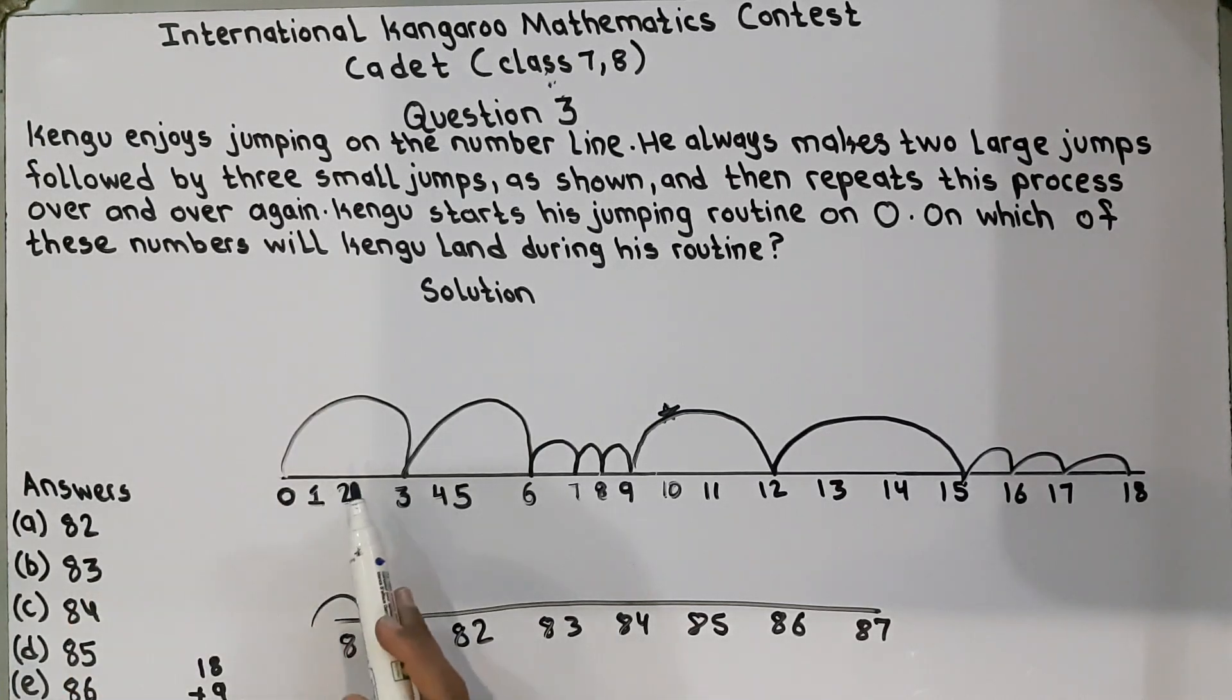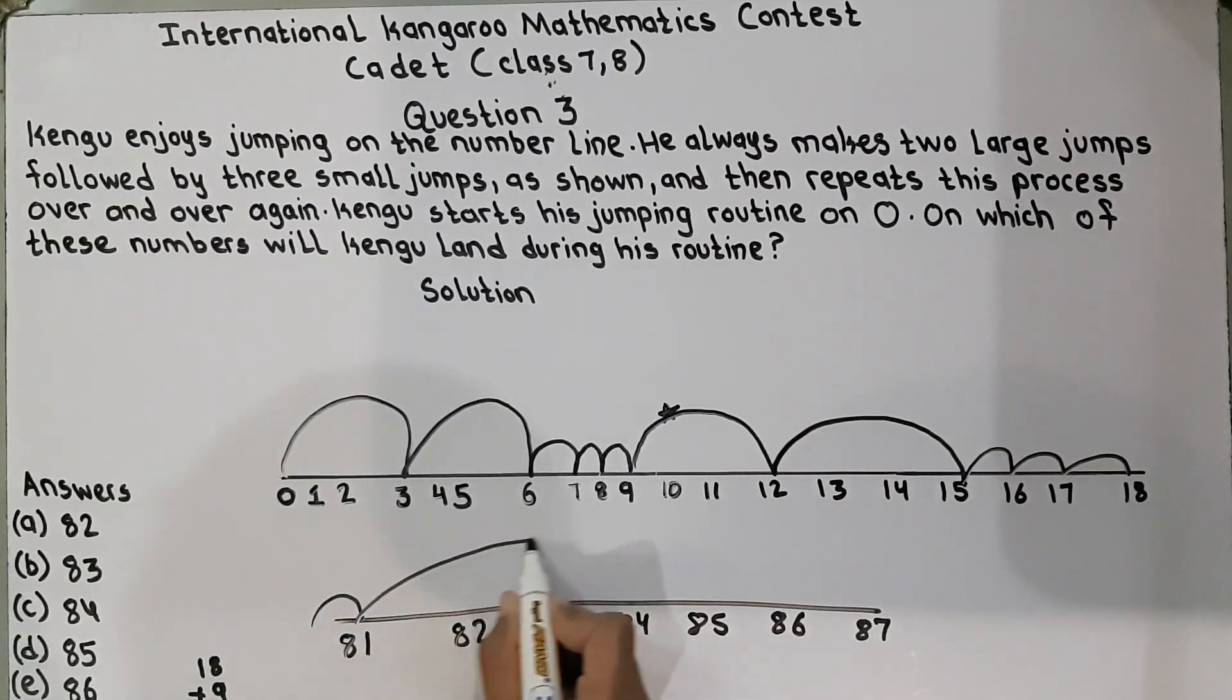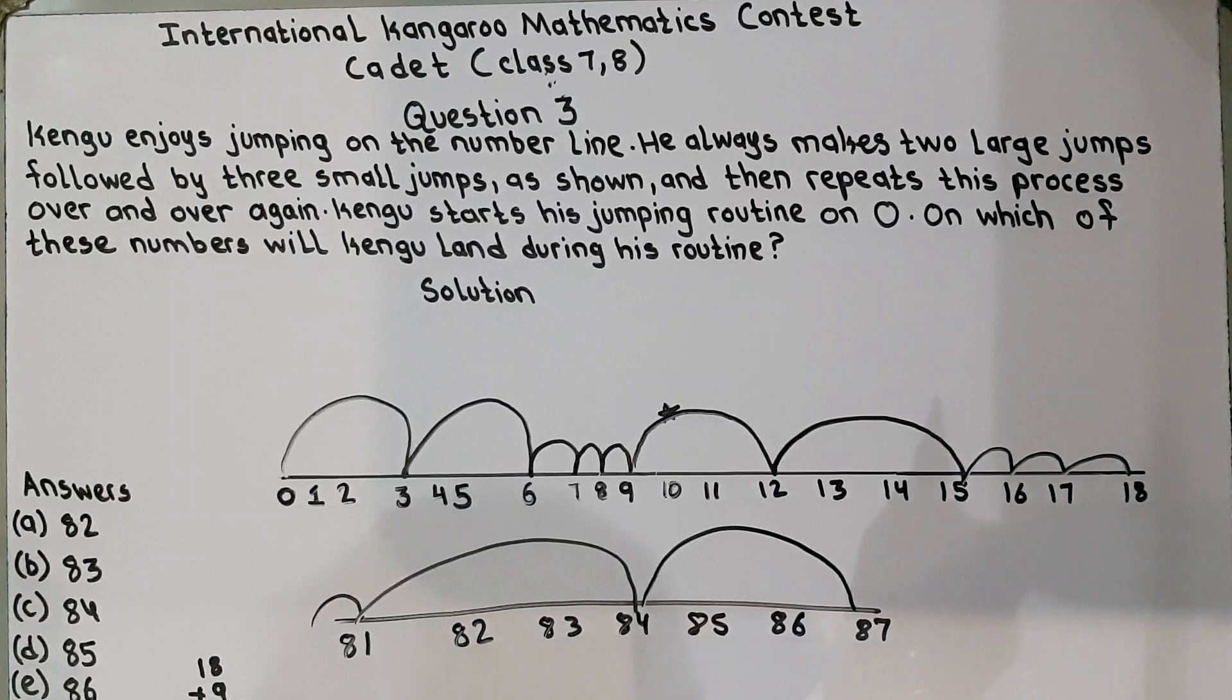So now he will make his long jump again by leaving 2 digits on 84 and if he makes 1 more jump, he will land on 87 but 87 is not the option. So he lands on 84.